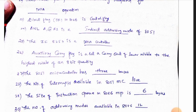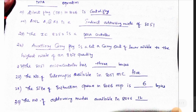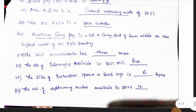The direction flag in the 8086 is a control flag. ANL A, @R1 is an indirect addressing mode. The IC 8257 is a DMA controller. The 8086 microprocessor has 3 buses. The number of interrupts available in the 8086 microprocessor is 5. The size of the instruction queue in the 8086 microprocessor is 6 bytes. The number of addressing modes available in the 8086 microprocessor is 12 addressing modes.